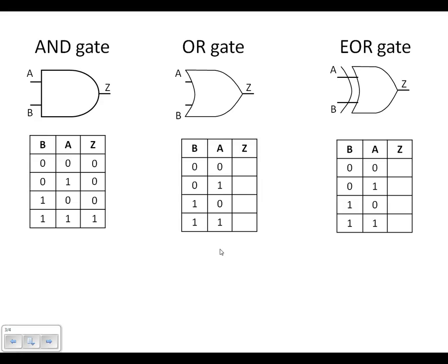For the OR gate, the output is going to be high whenever A is high — which is here or here — or when B is high, which is here and here. All other cases the output is going to be 0.